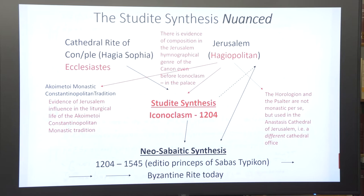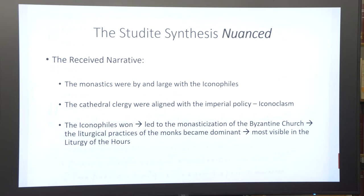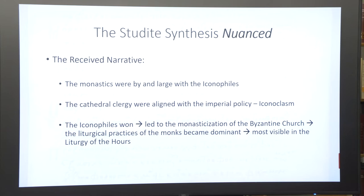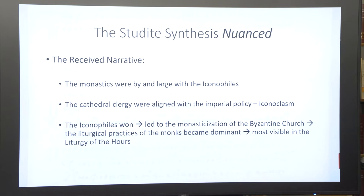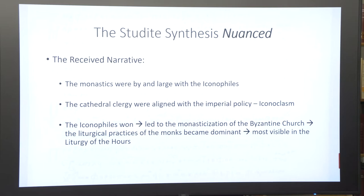One thing that is very useful in this study is the role, the place, and the popularity of the canon — this hymnographical genre of the canon. The received narrative is that the monastics during the iconoclastic era were by and large with the iconophiles, whereas the cathedral clergy were aligned with imperial policy — in other words, more or less in favor of iconoclasm. So the iconophiles won, which led to the monasticization of the Byzantine church, which basically led to the de facto dominance of the liturgical practice of the monks. And we see that most visibly in the liturgy of the hours.